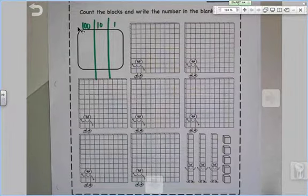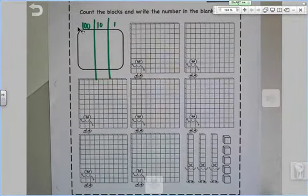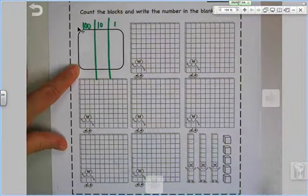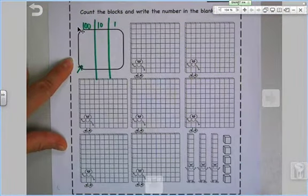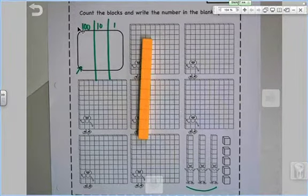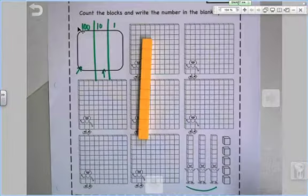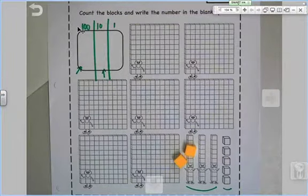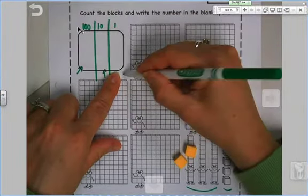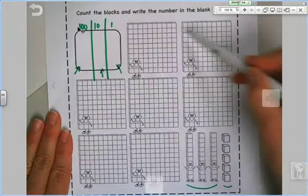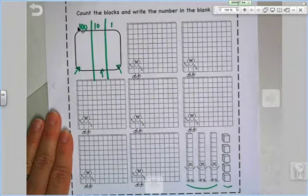You're going to count. How many hundreds flats are there? Don't tell me how much it's worth. How many flats are there? How many of these do you see? And you're going to write it in the hundreds place. Then you're going to ask yourself, how many tens do I see? And you'll write it in the tens place. And finally, you'll ask yourself, how many ones do I see? You'll count them, and you'll write it here in the ones place. You'll have a single number. This number is the same as the model.